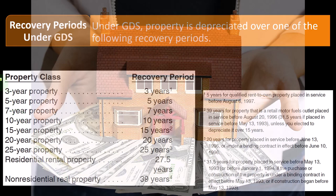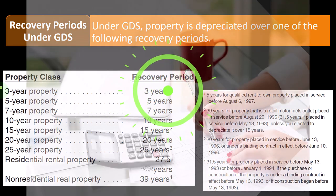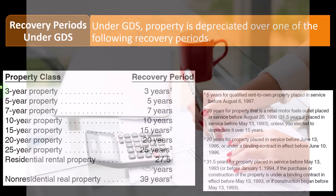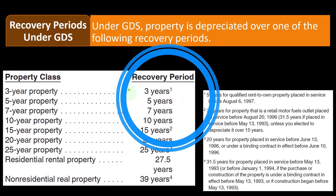The recovery periods under GDS: under the most common MACRS system, property is depreciated over one of the following recovery periods. Notice we have the property classifications, and within those classifications, the name of the property class often tells you the recovery period — though that might not be the case in all situations. The system works like this: determine if the item needs to be capitalized and depreciated, or can be expensed in the current year. If you have to depreciate it, find the proper property class category, and within that category, the recovery period is determined.